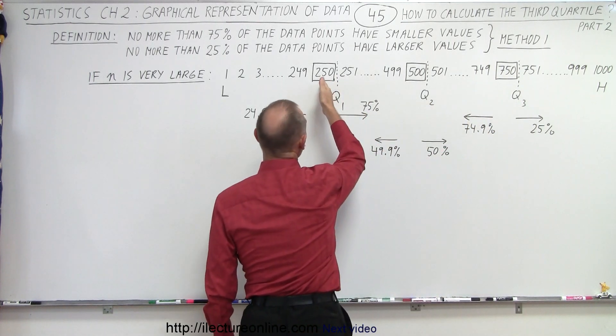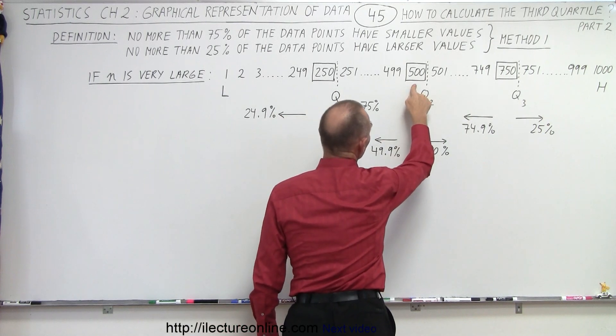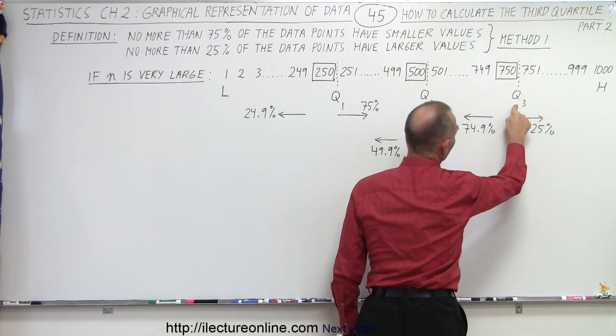This happens to be the 250th location, which becomes quartile 1. The 500th location becomes quartile 2, and the 750th location becomes quartile 3.